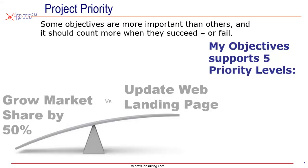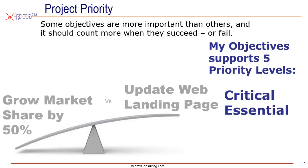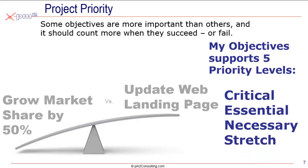Within My Objectives, we support five priority levels. An objective could be critical, essential, necessary, stretch, and even unplanned. Those are gradations of priority inside each objective.